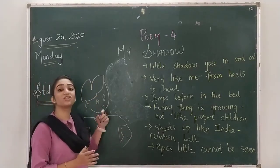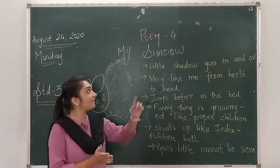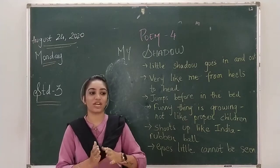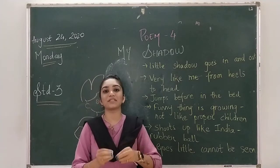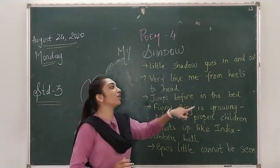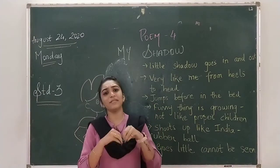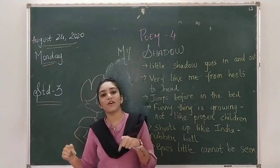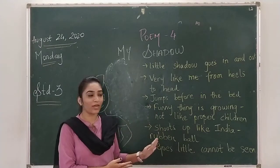Now this child who is talking about his shadow — what he says about the shadow? He says that his little shadow goes in and out. Like sometimes the shadow is behind him, sometimes the shadow is in front of him. So that means the shadow goes in and out, very likely from heels to head. Obviously, if it is our shadow, it will be just like us from top to bottom — heels to head means the heels of our foot and our head.